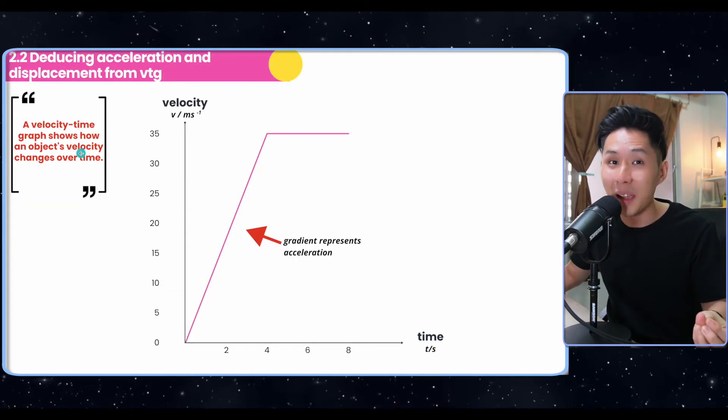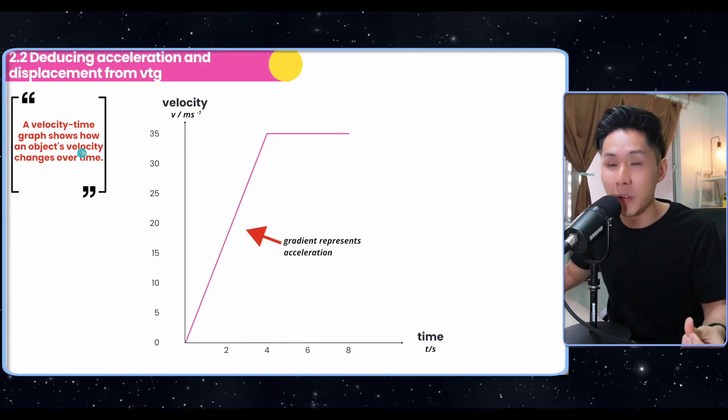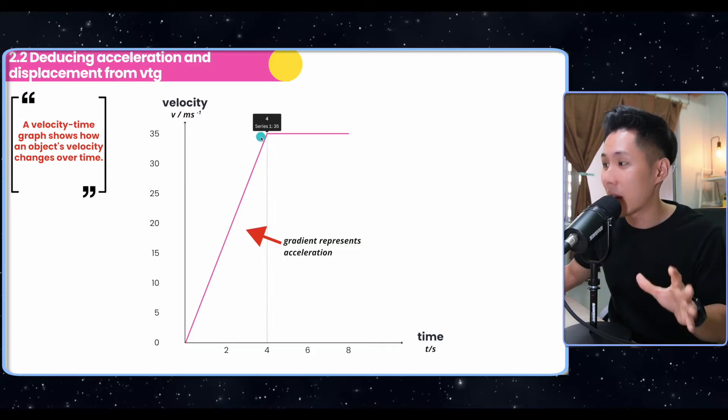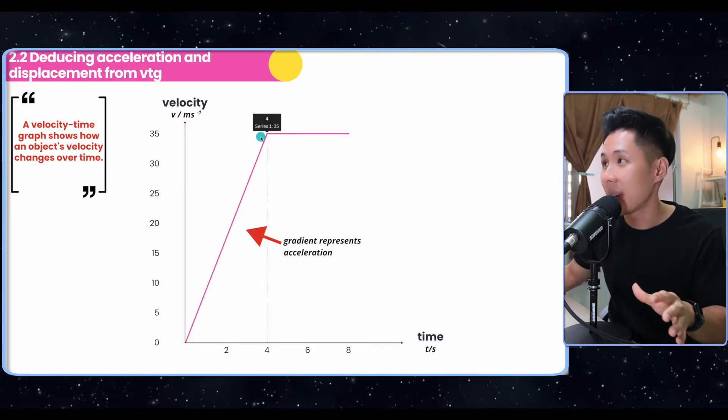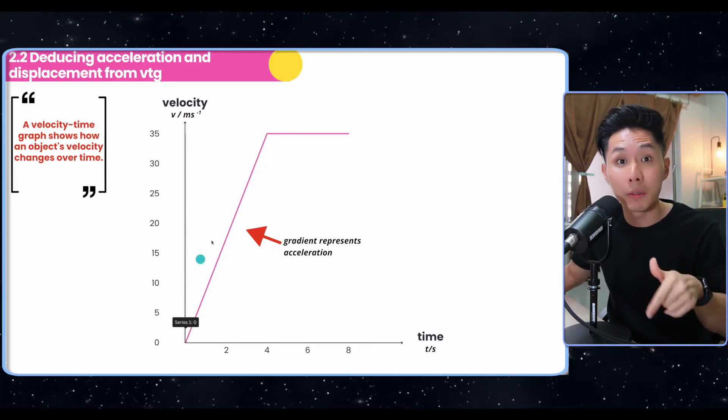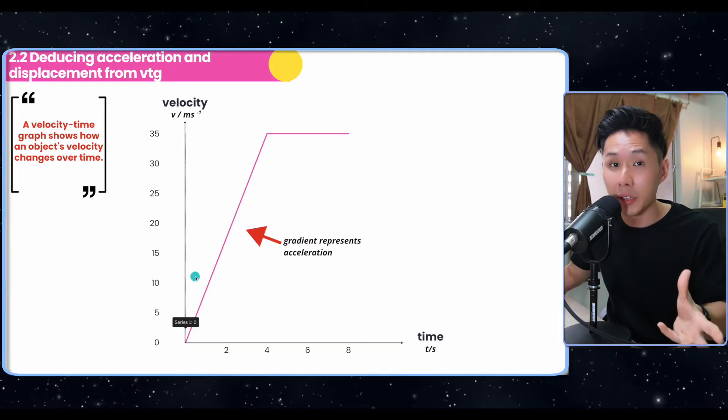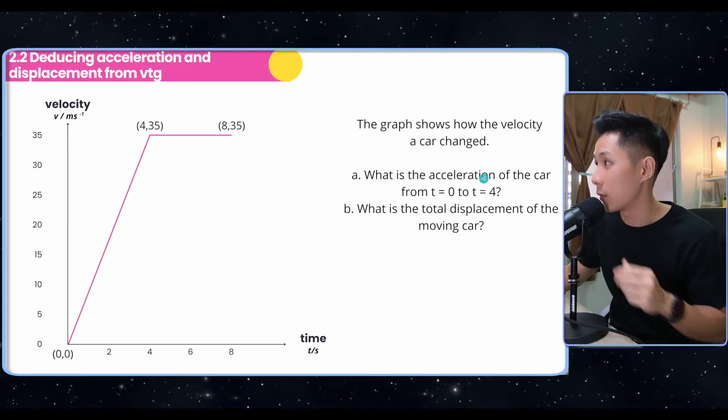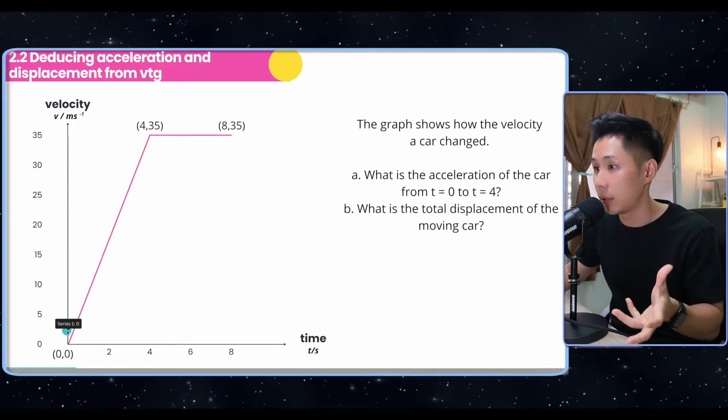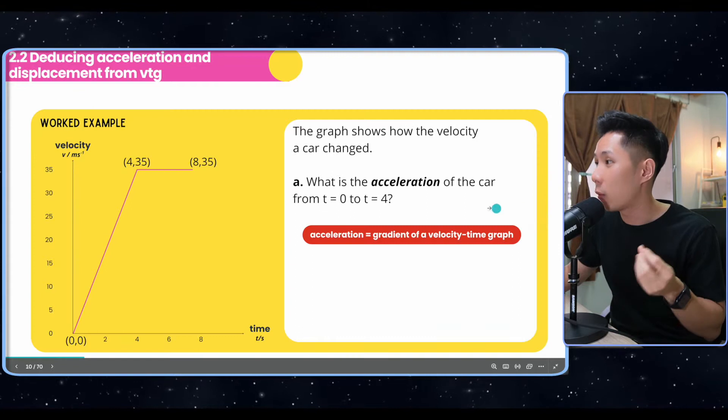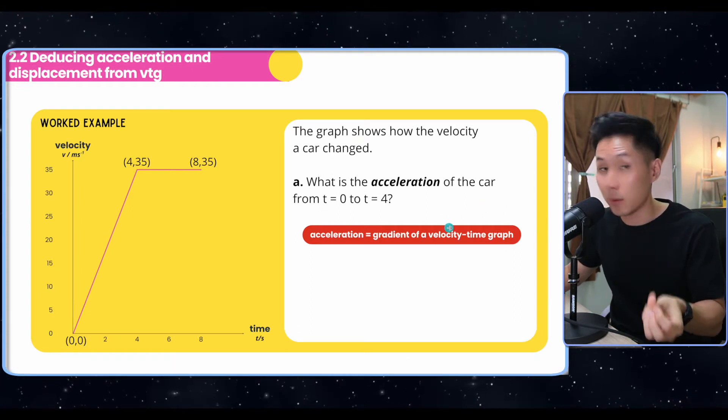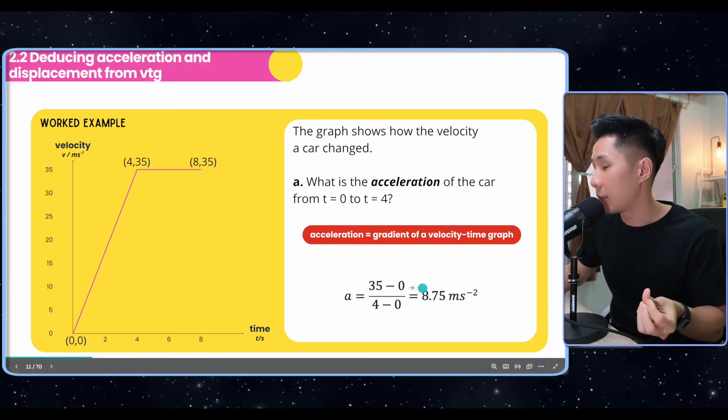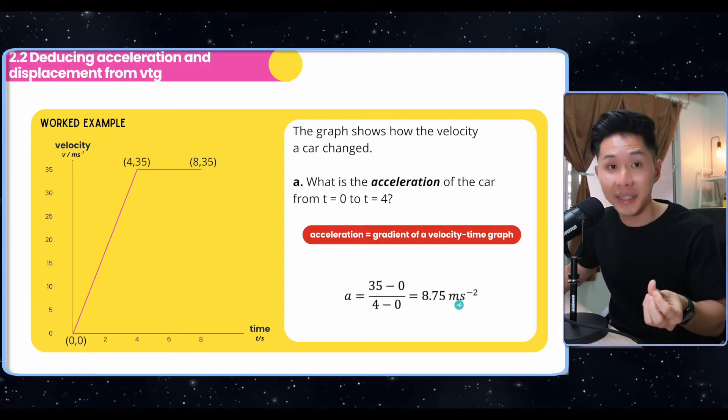We also have a velocity time graph that can help us to calculate acceleration. So this is a velocity time graph here, and it shows an object's velocity at a particular time, and the gradient of a velocity, which is the rate of change of velocity, is the acceleration. Now, just to solve a question real quick, what is the acceleration of the car from t equal to 0 to t equal to 4, and how we can solve that is to use the gradient of the graph. So I'm going to use point number 1 and point number 2, and apply that into my formula, and I'll get the acceleration.